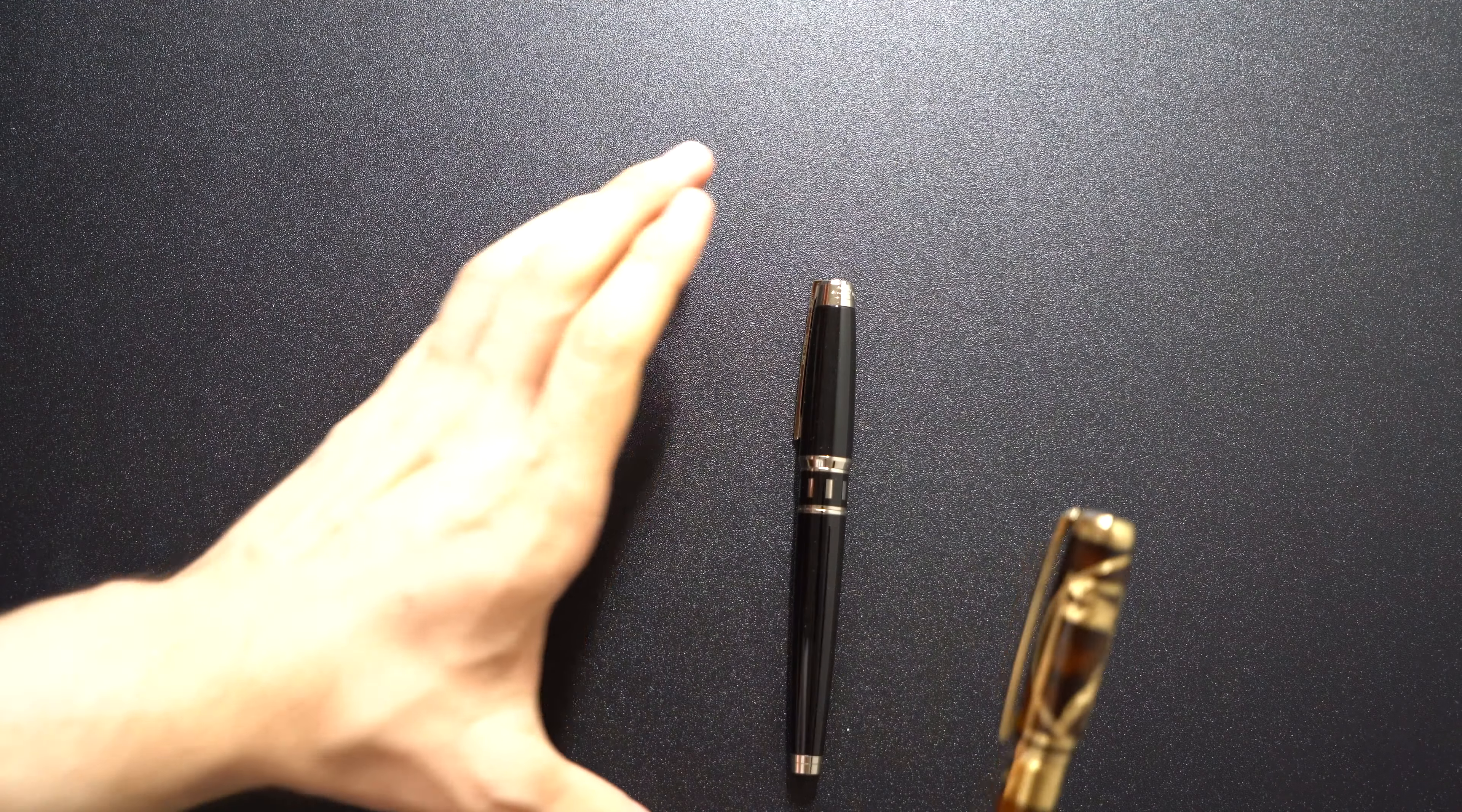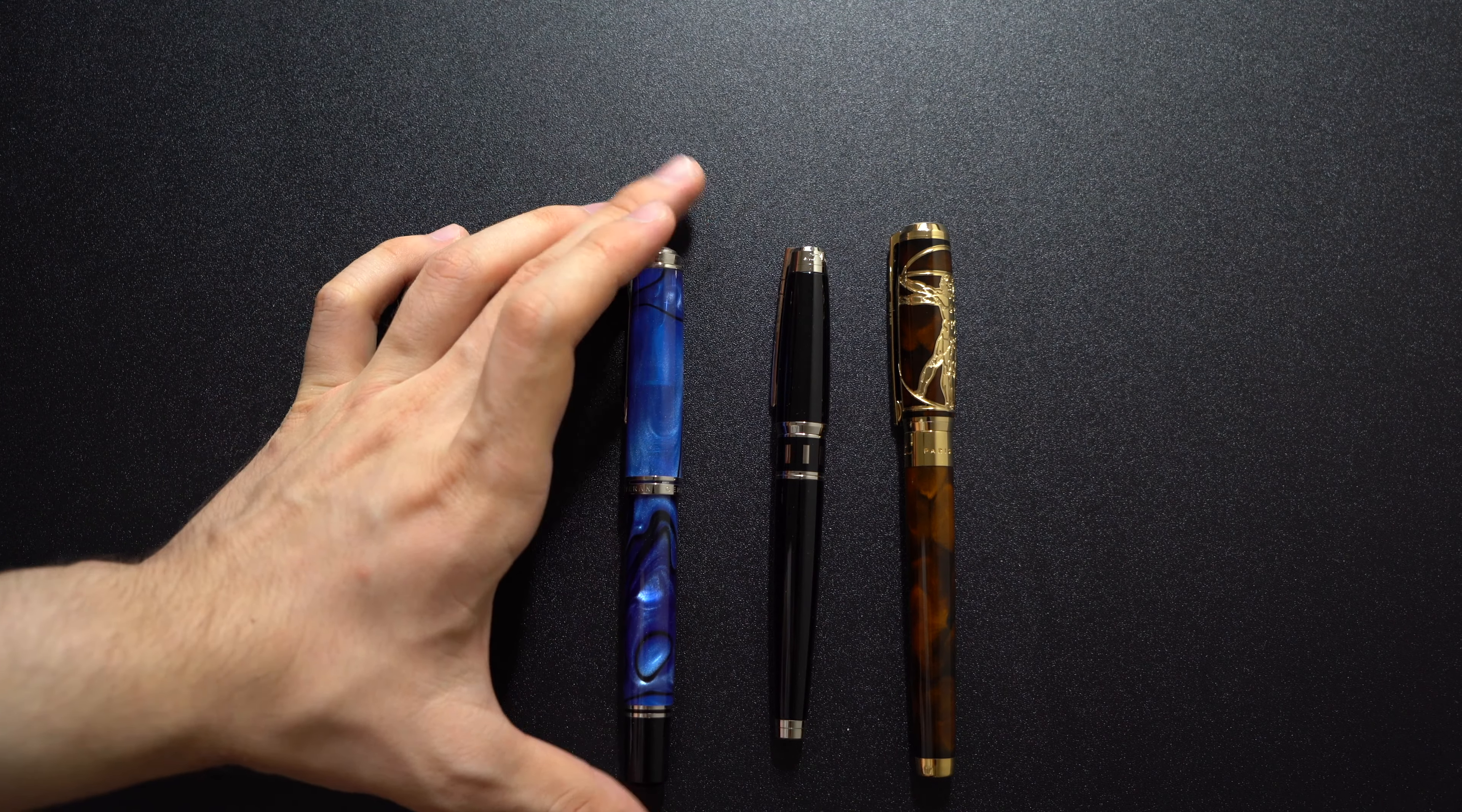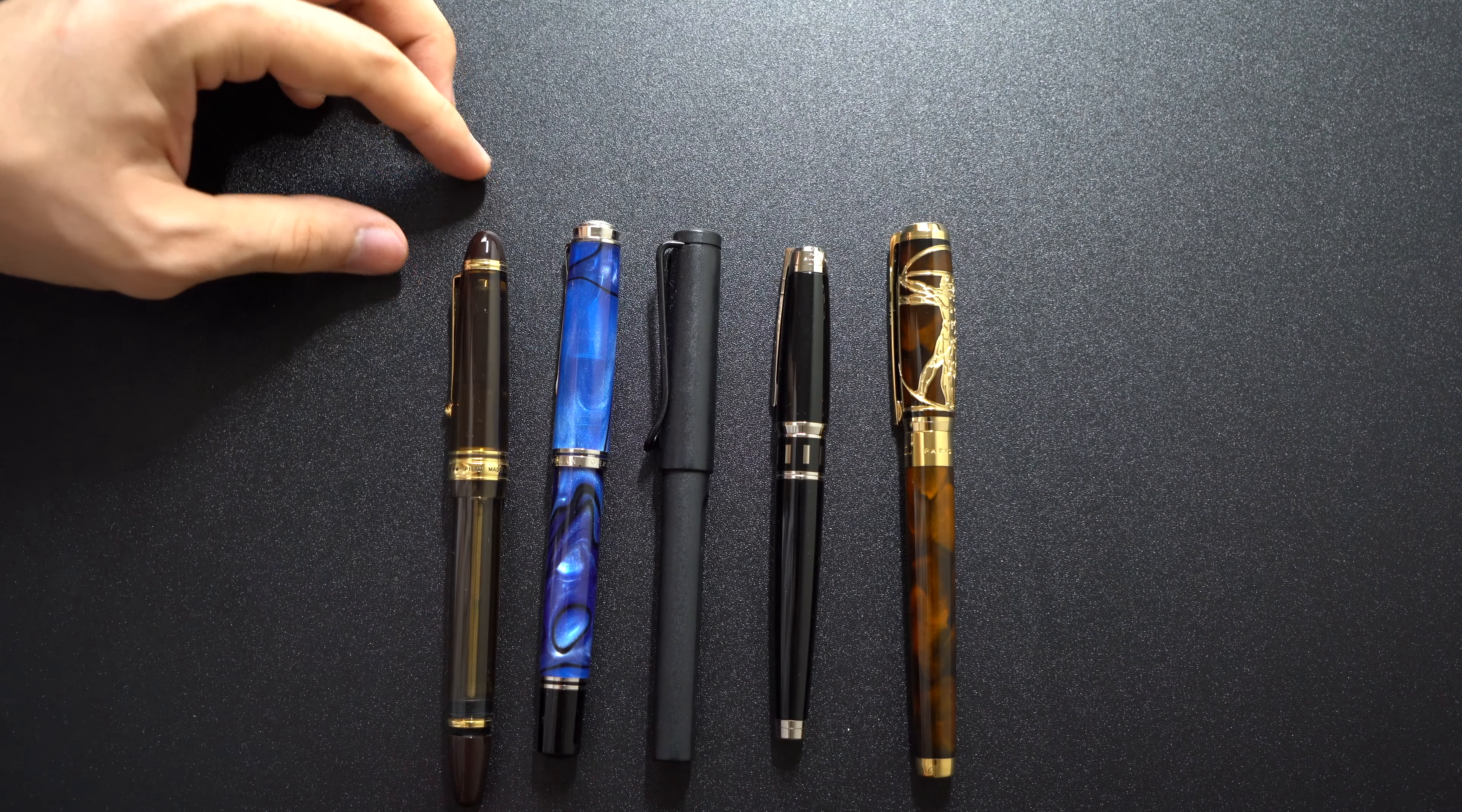Now let's get into size comparisons. First we have the Line D from the same brand. This is the Vitruvian man. We have the Pelikan 805, you can see how smaller the pen is and it's a little bit slimmer too. We have the Lamy Safari which is not a small pen to begin with. We have the Pilot Custom 823 which kind of dwarfs it.